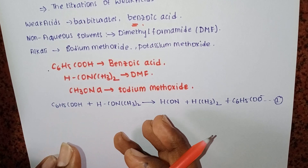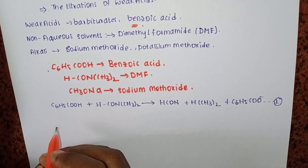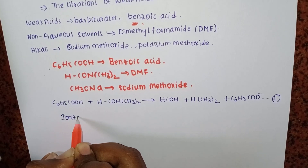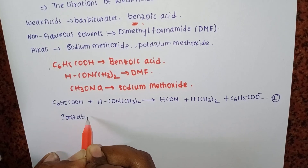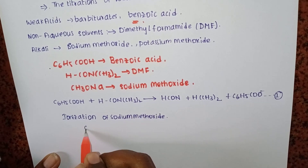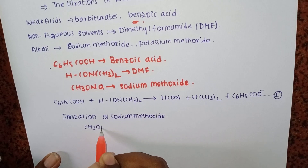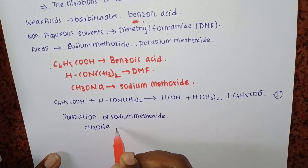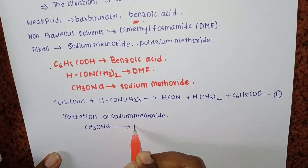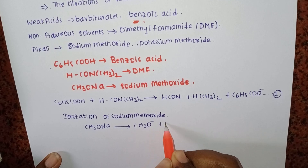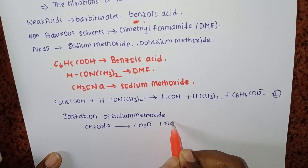The next step is the ionization of sodium methoxide. The formula for sodium methoxide is CH3ONa. It ionizes to give CH3O- plus Na+. This is equation 2.